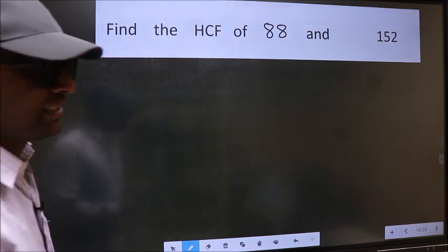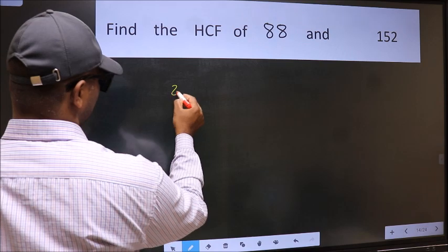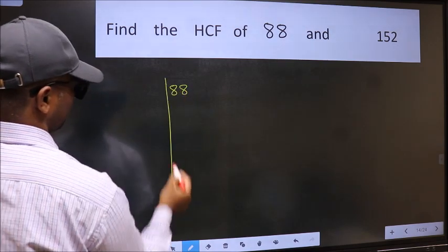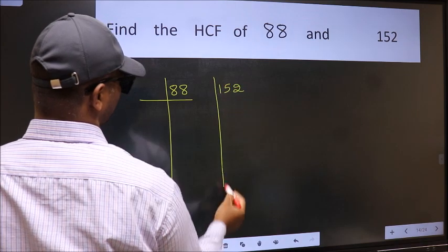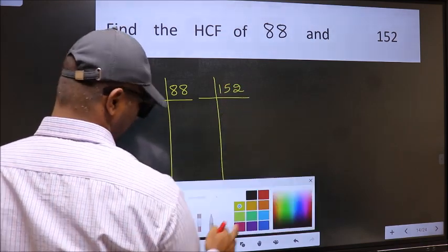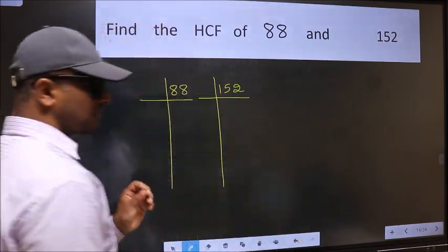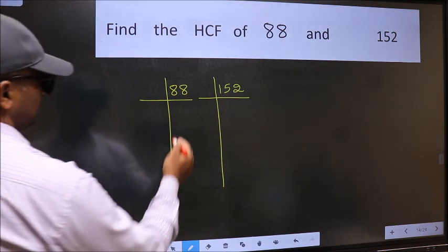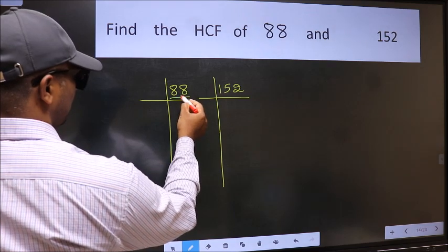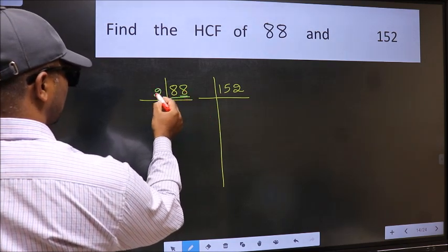What I mean is, 88 and 152. This is your step 1. Next, in this number, last digit 8 is even, so take 2.